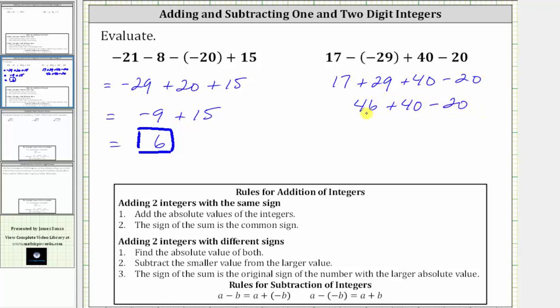For the next sum, again, we're adding two positives. 46 plus 40 is equal to 86, giving us 86 minus 20.